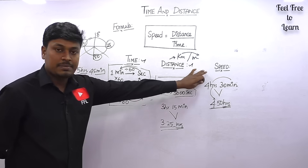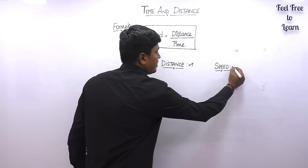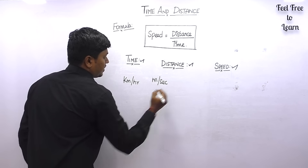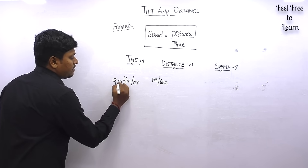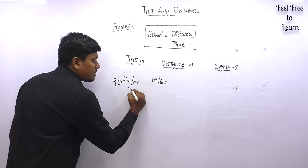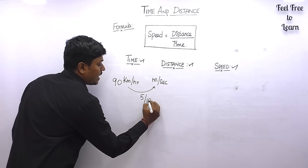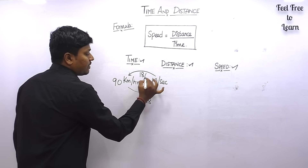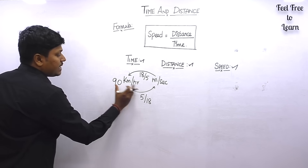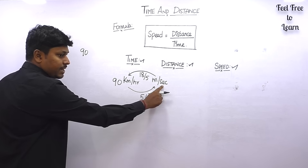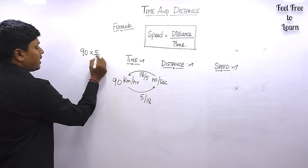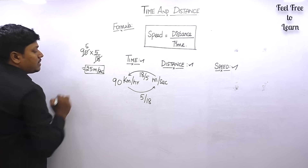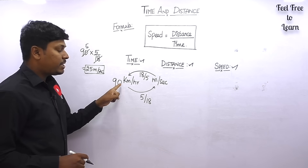When it comes to speed, we have two units: kilometers per hour and meters per second. To convert kilometers per hour to meters per second, multiply by 5/18. To convert meters per second to kilometers per hour, multiply by 18/5. For example, 90 kilometers per hour multiplied by 5/18 gives 25 meters per second.